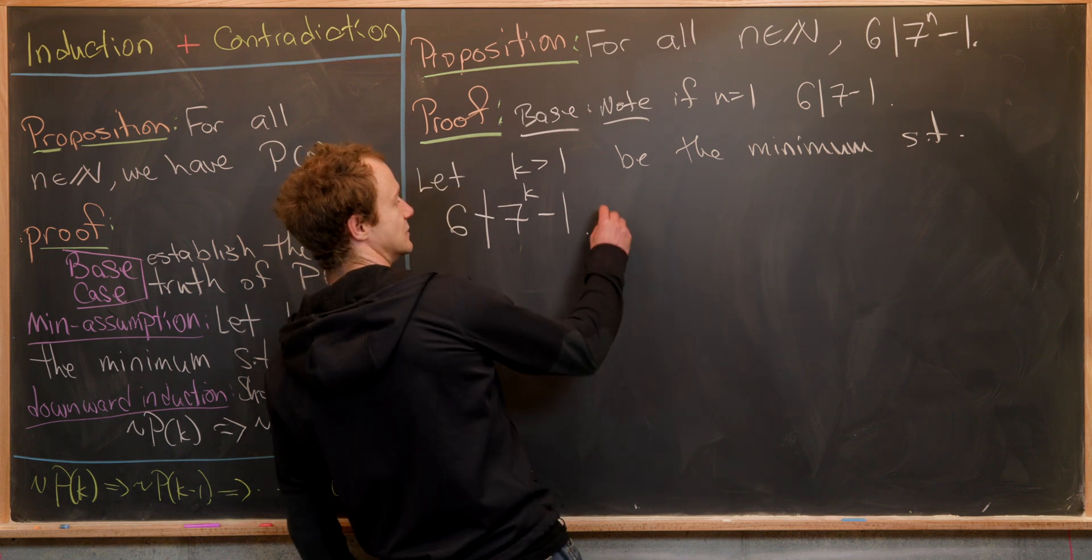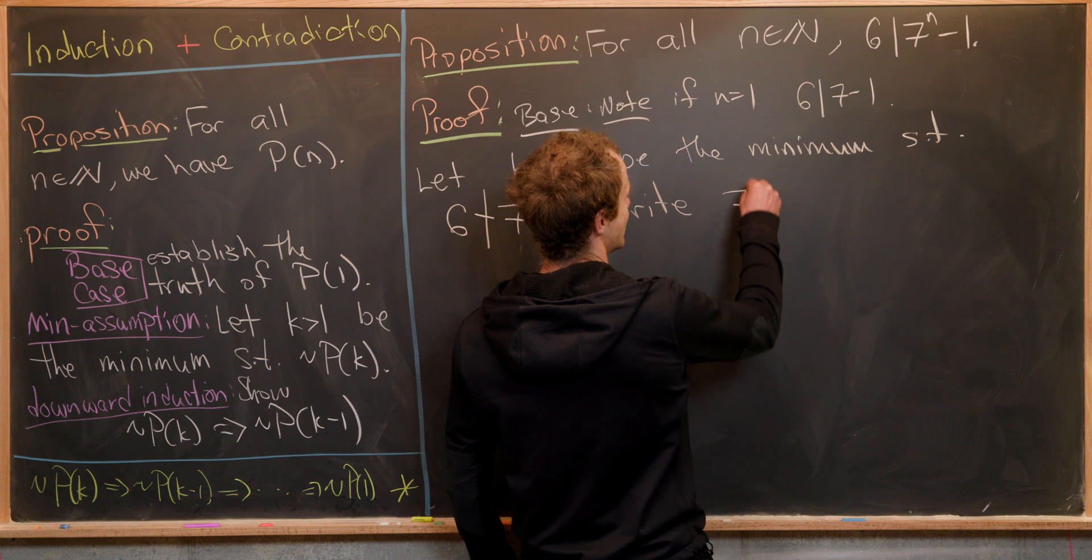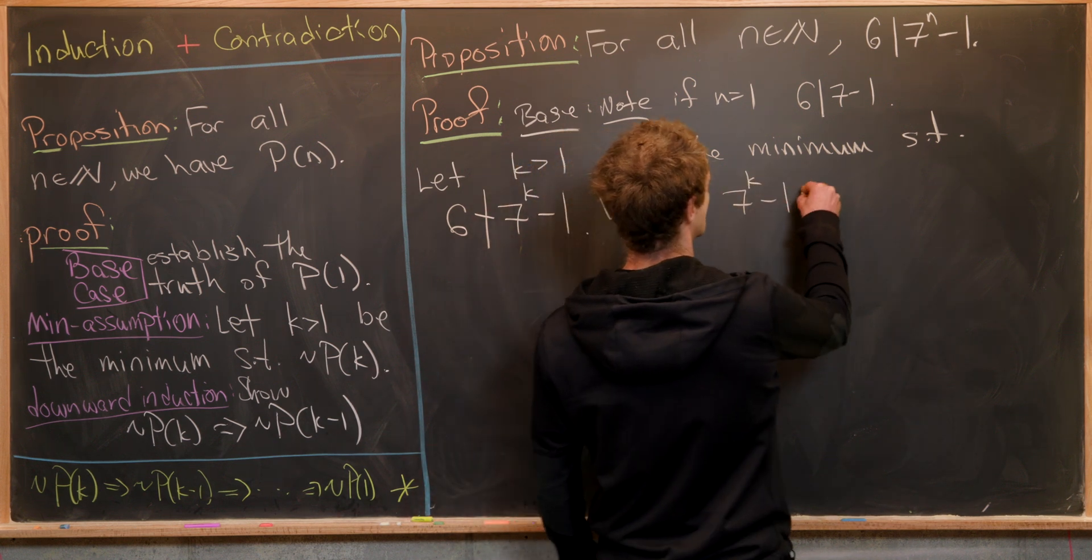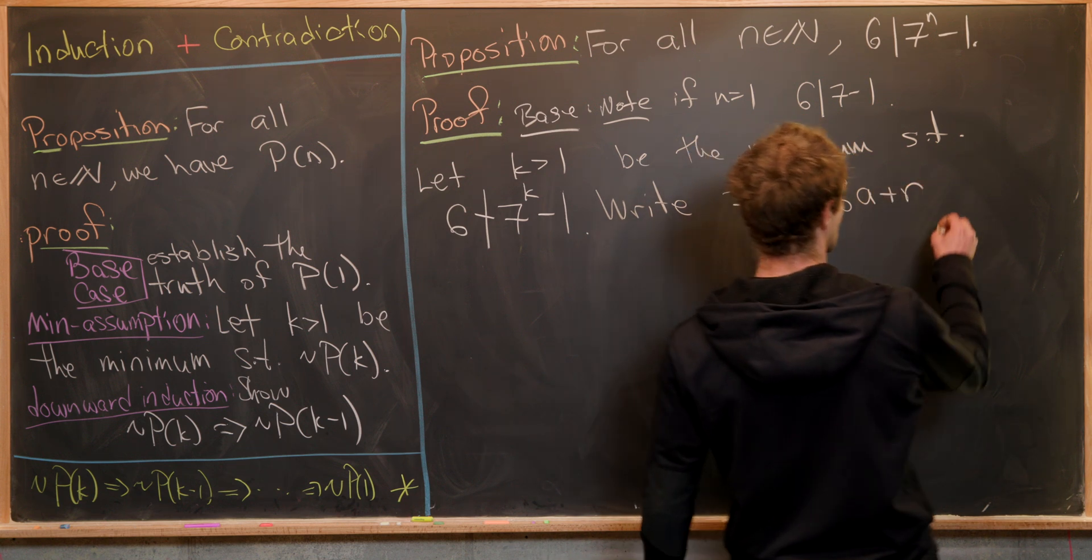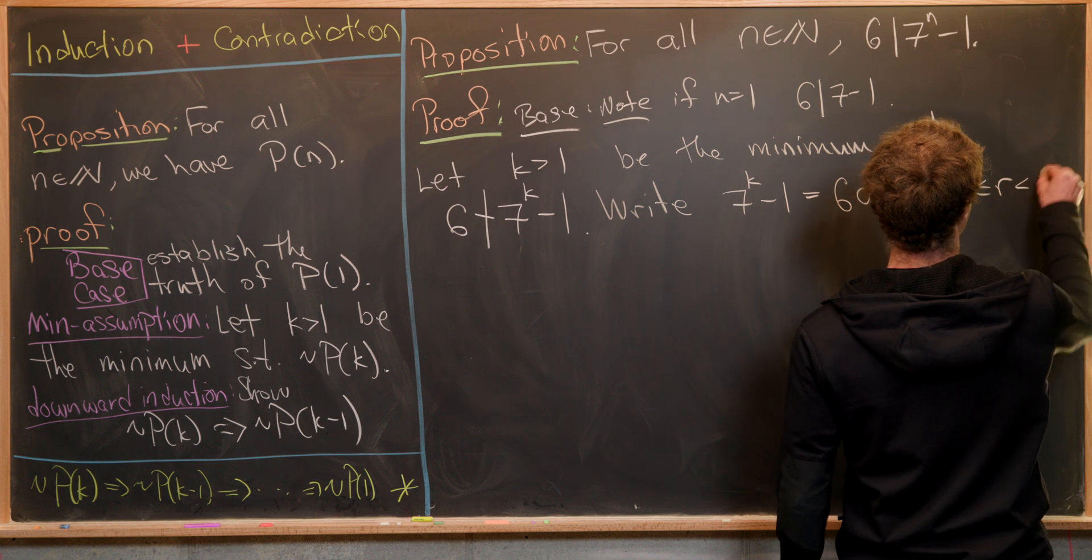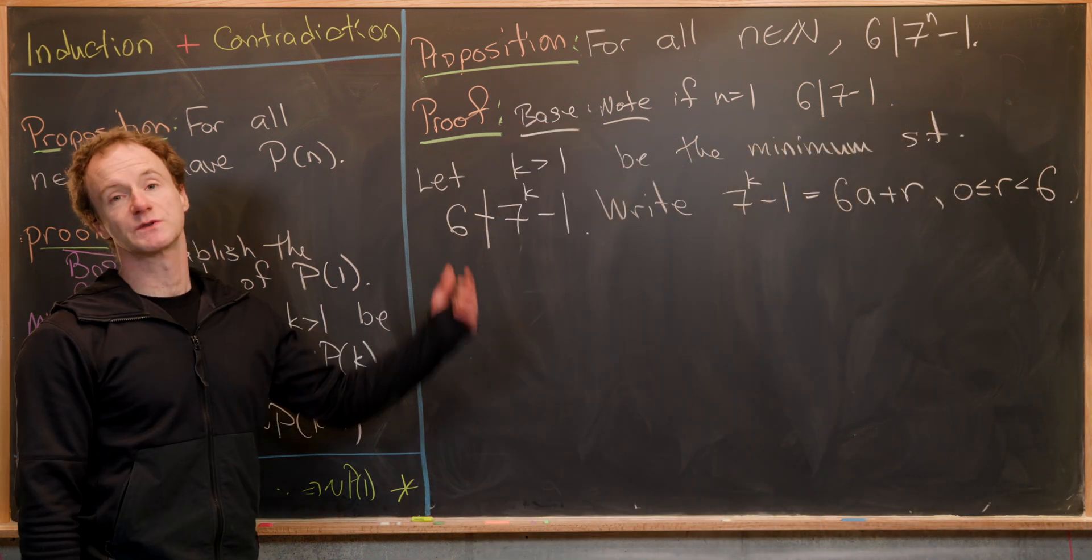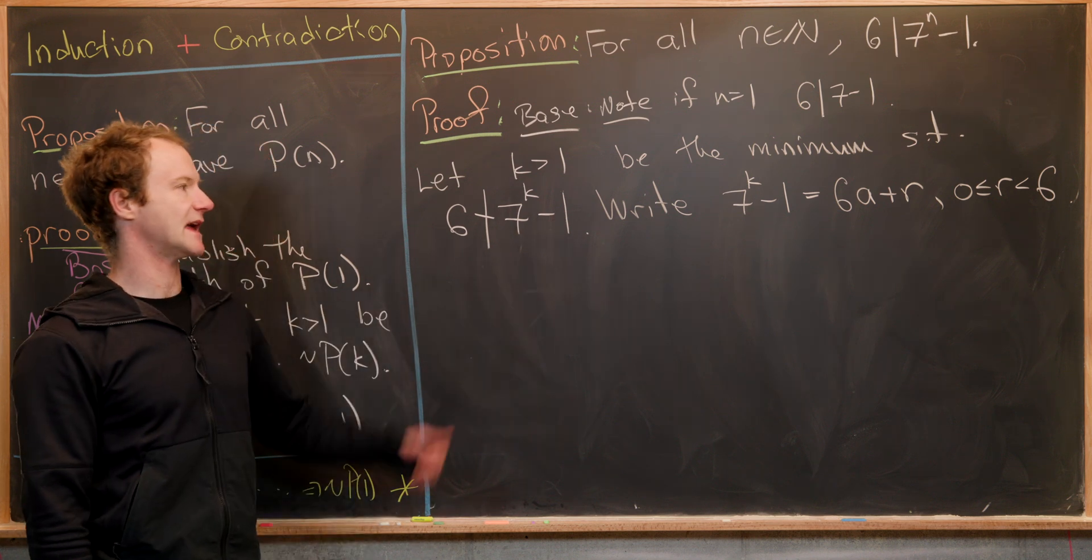Here's what we'll do: write seven to the k minus one as six times a plus r, where r is some number between zero and six. In other words, we're using the division algorithm with seven to the k minus one and six.